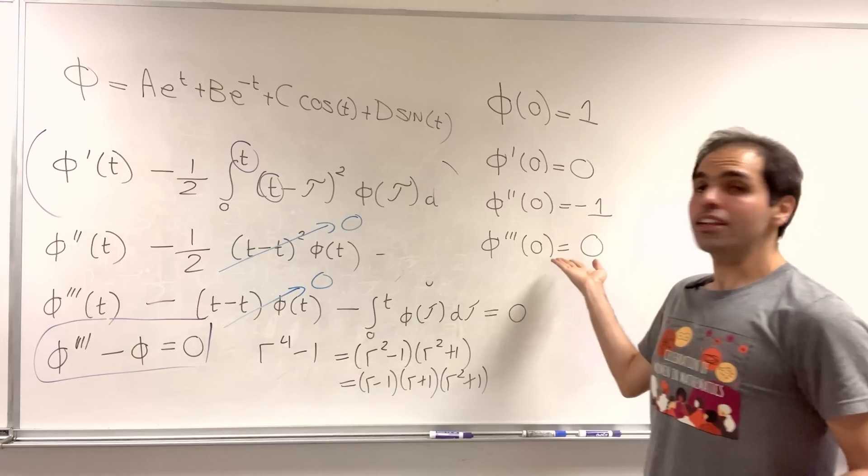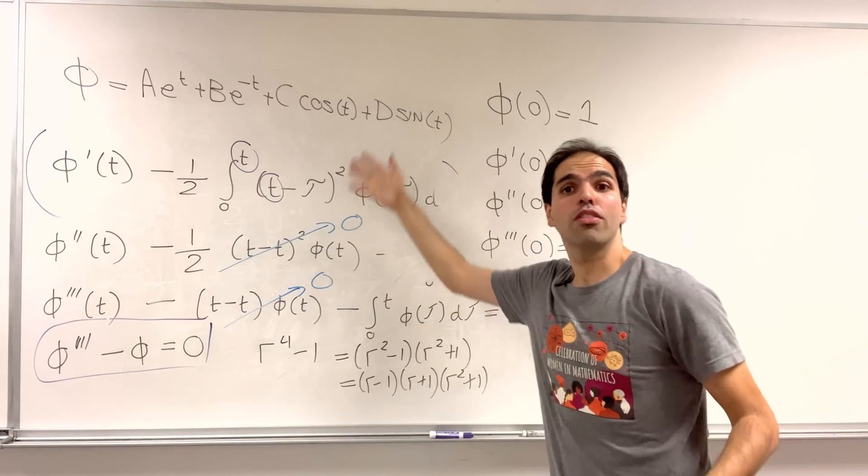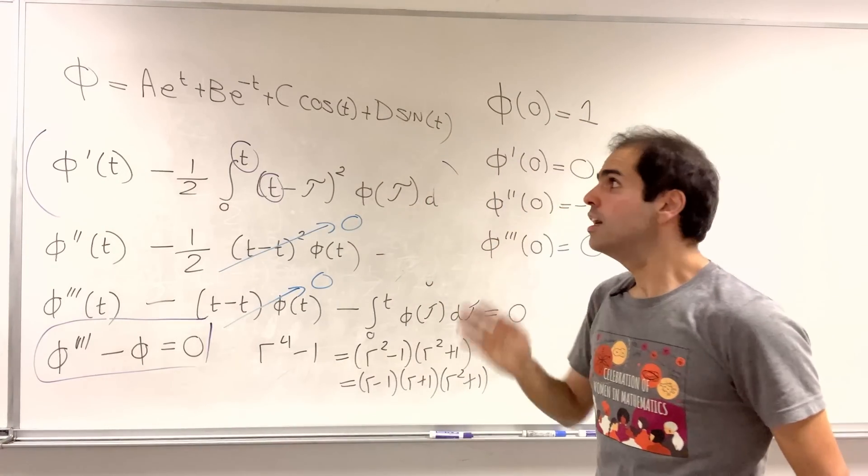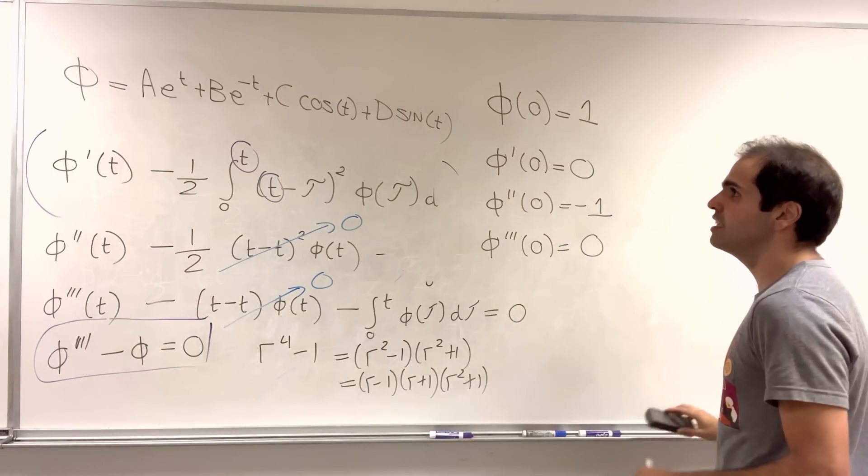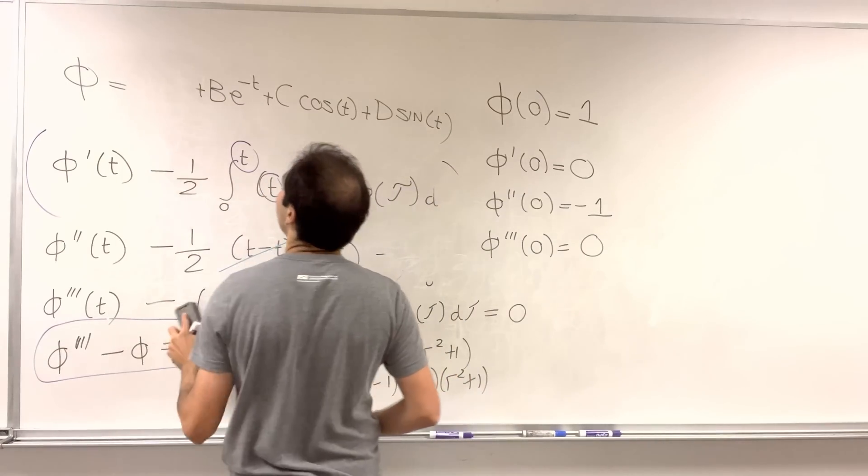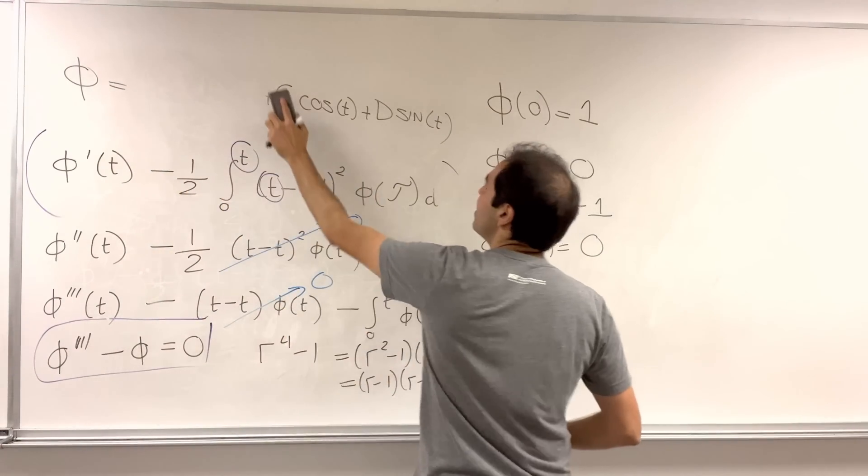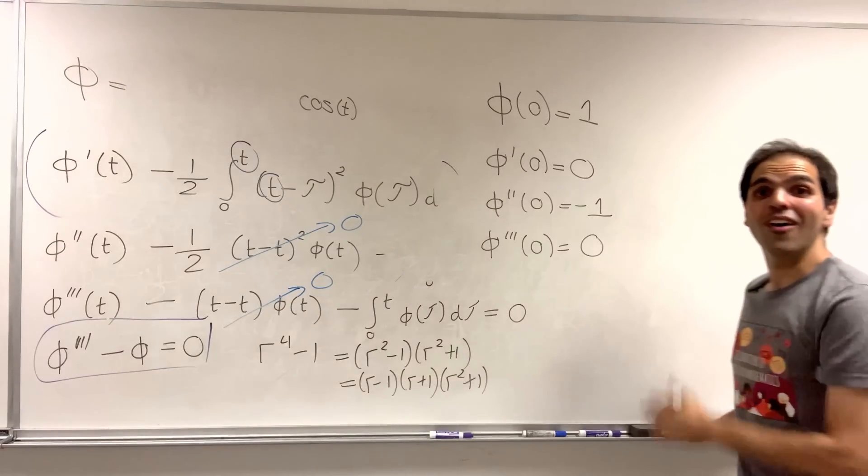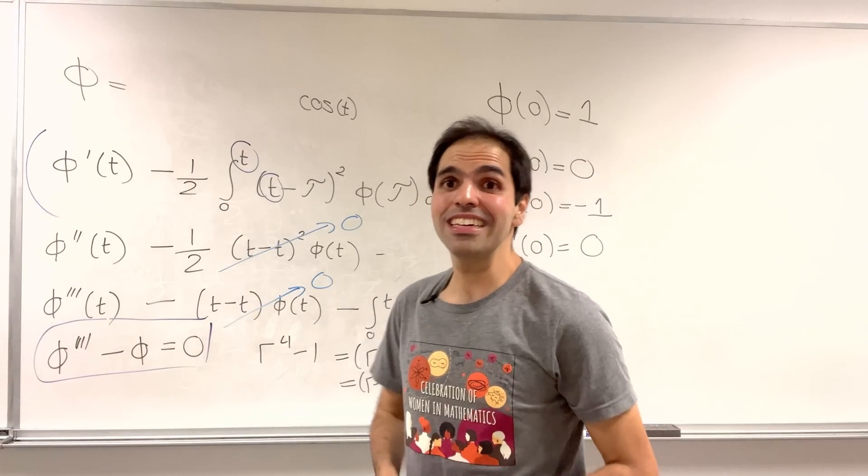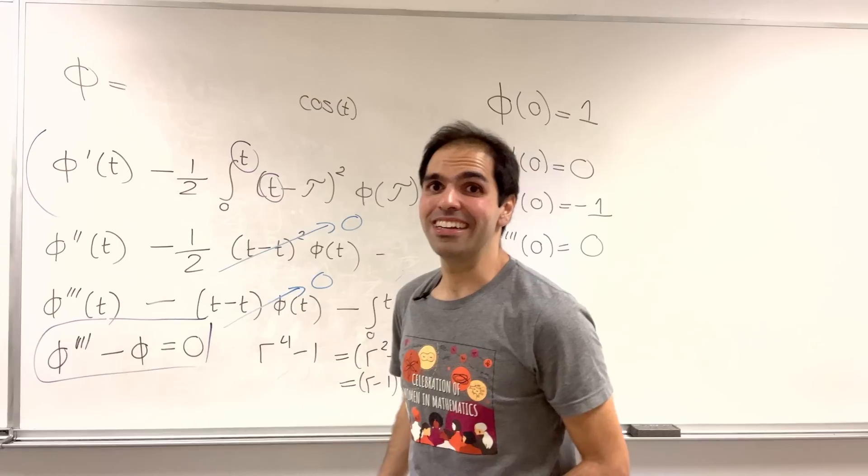And, in fact, if you differentiate all those and you plug in t equals zero and you solve for a, b, c, and d, you should get that a equals zero, b equals zero, c is one, and d is zero. And, so, our mystery function, once again, is just cosine. Wow.